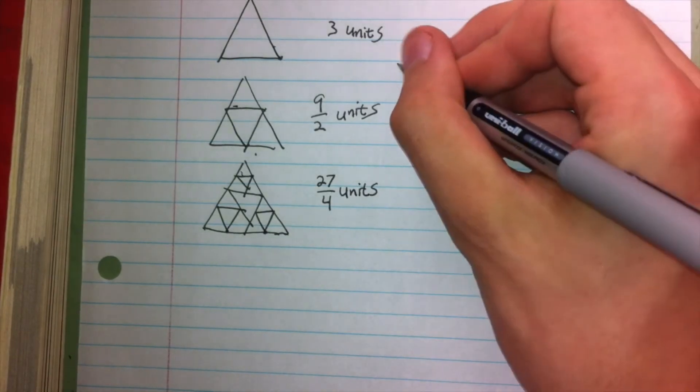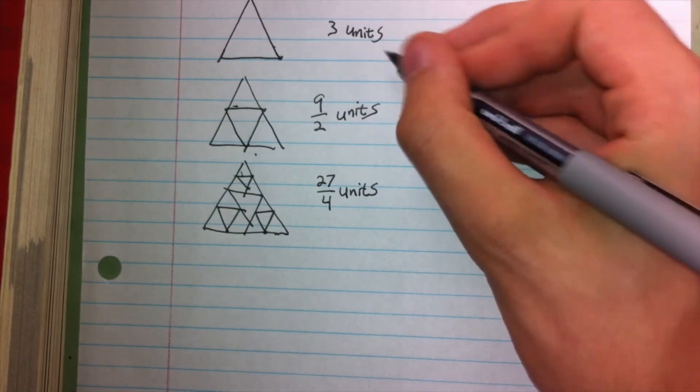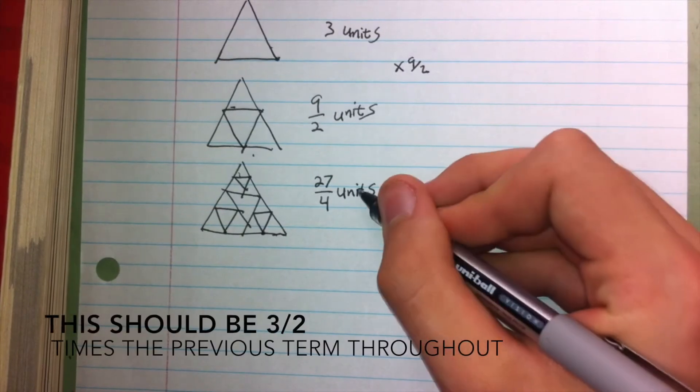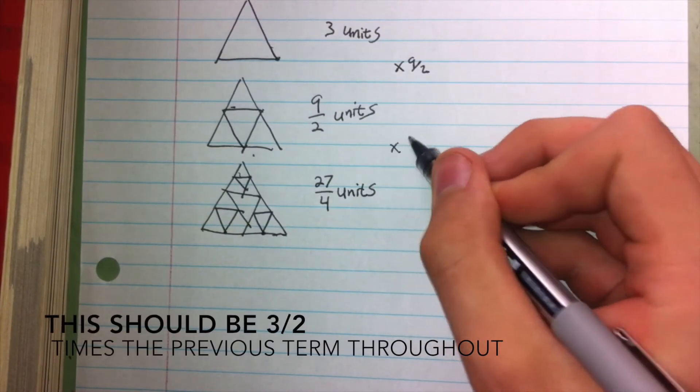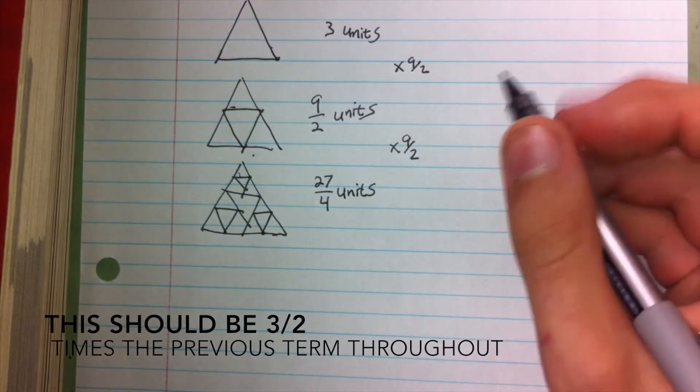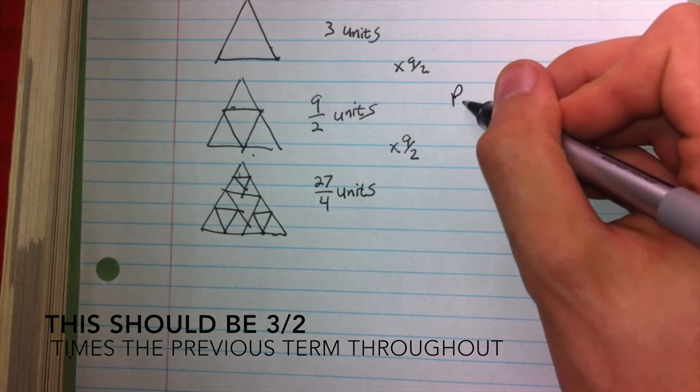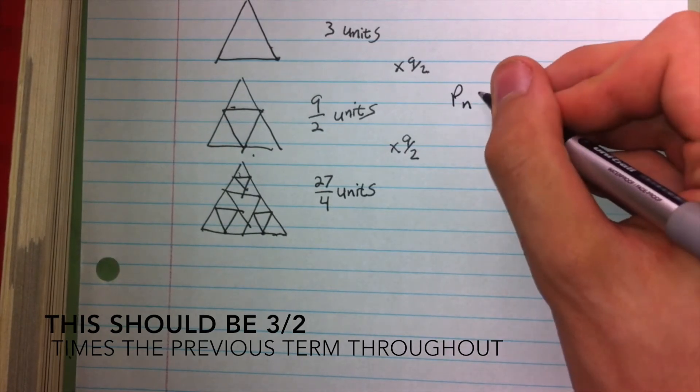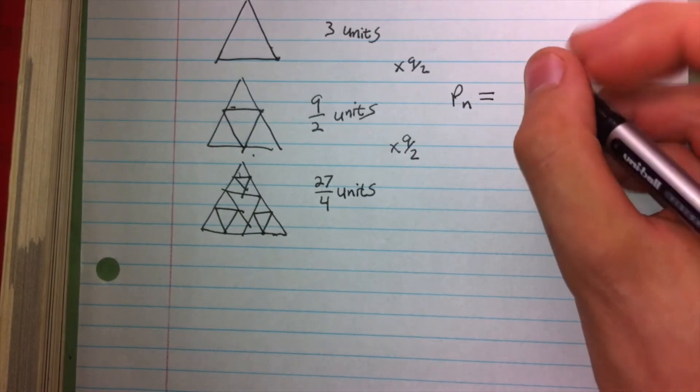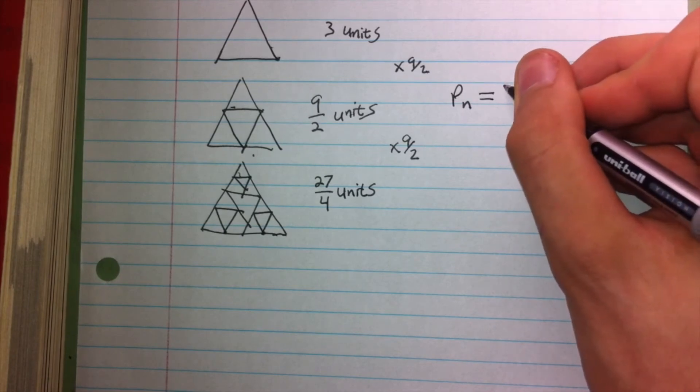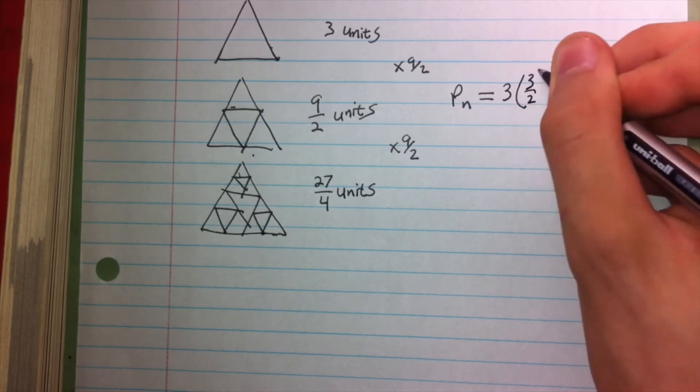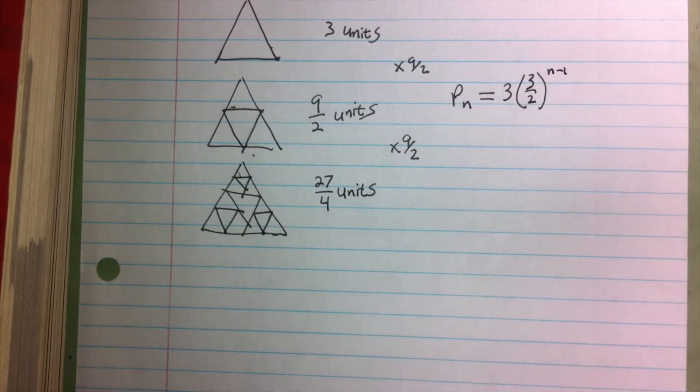We can recognize that this is nine halves times the previous term, and this term is nine halves times the previous term. And so we can say that the perimeter of Sierpinski's triangle is equal to three times three halves to the n minus one power.